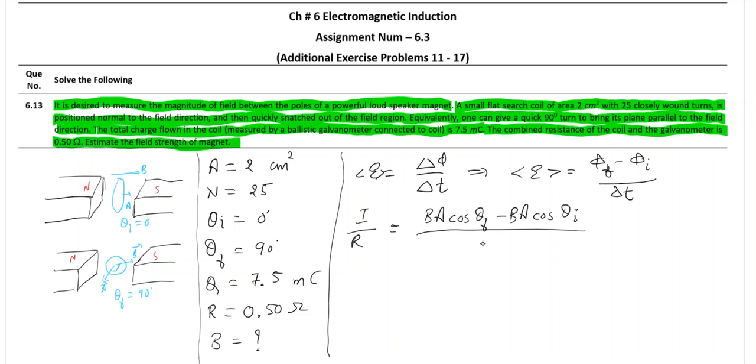So average epsilon is phi 2 or phi final minus phi initial upon delta t. Now we know that cos 90 is 0 and hence this term will be 0. So what we are left with?